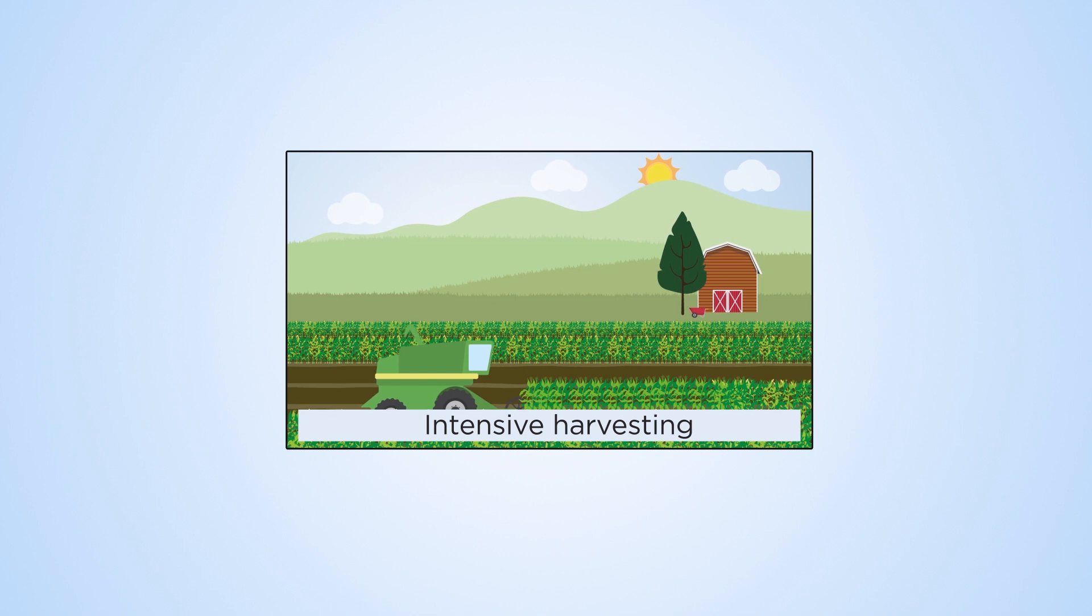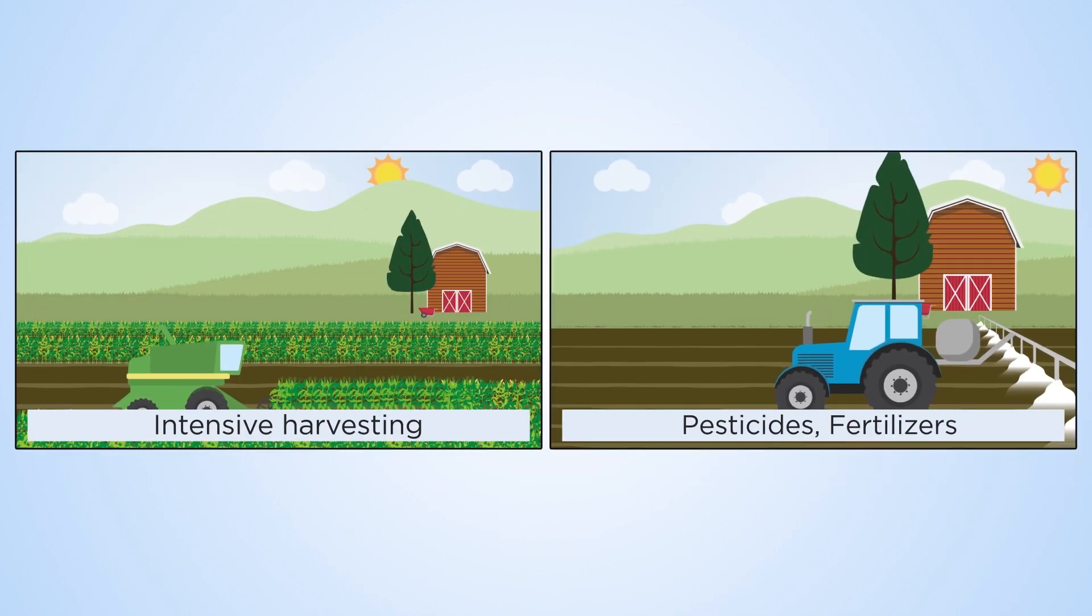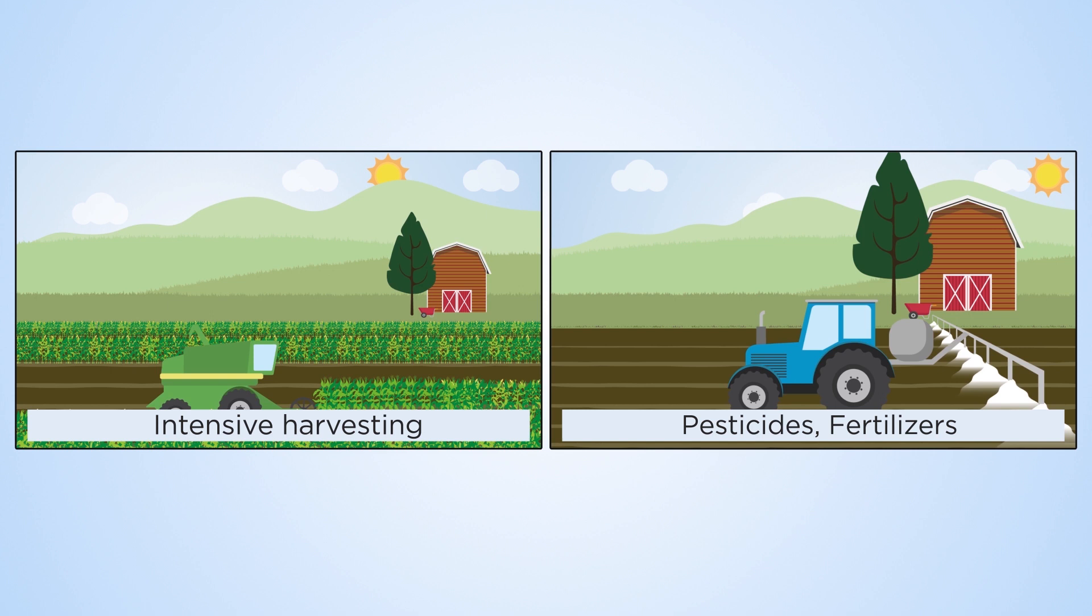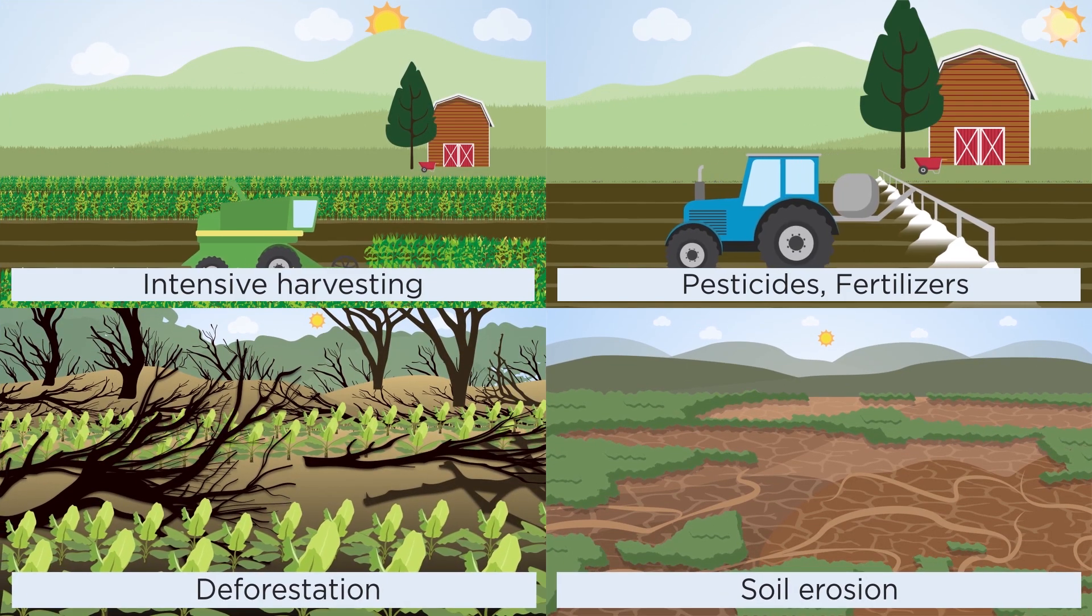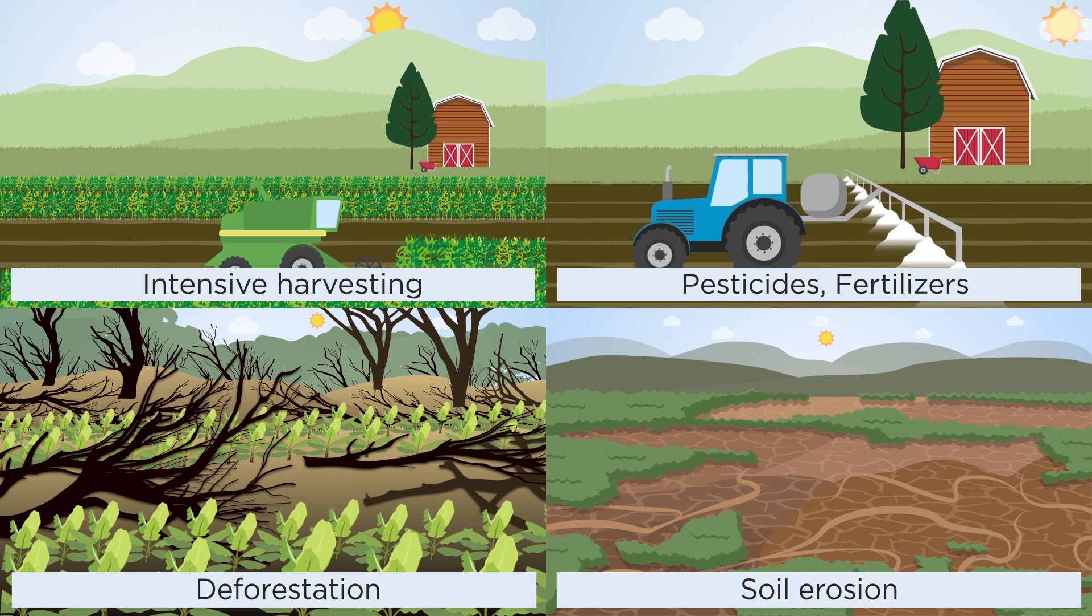Intensive farming has created this agricultural success, but also has serious negative consequences for biodiversity. Habitats are destroyed and interactions between species are disrupted.